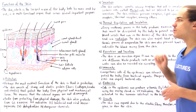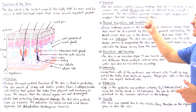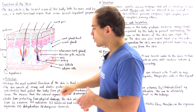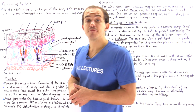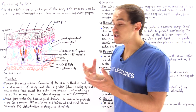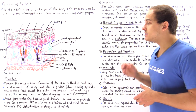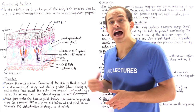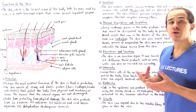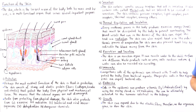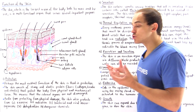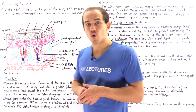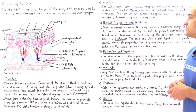Function number three is insulation and thermal regulation. The hypodermis — the subcutaneous layer — contains adipose cells that create a layer of insulation, keeping us cool on warm summer days and keeping us warm on cold winter nights.